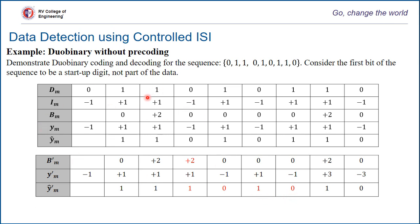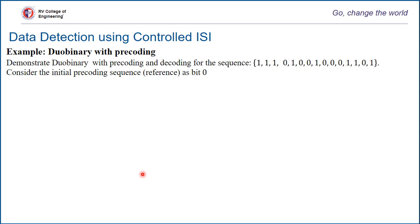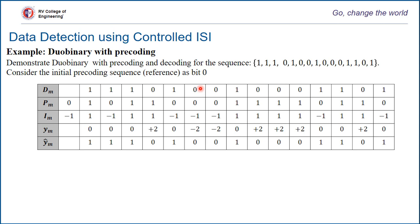Let's take another example — duobinary with precoder — and see how this problem is eliminated. I have taken a different, longer sequence to understand it better. The first bit is again considered as 0 as a reference bit, which is not part of the data itself. You can redo the problem with the reference bit as 1 as well. We will tabulate the different symbol representations at different points of the transmitter.